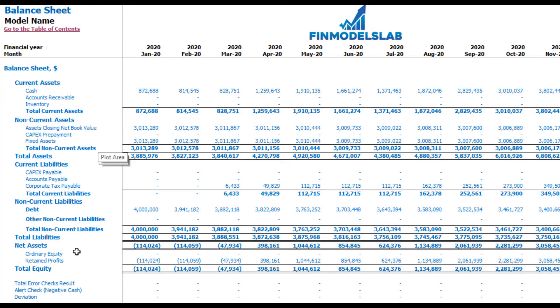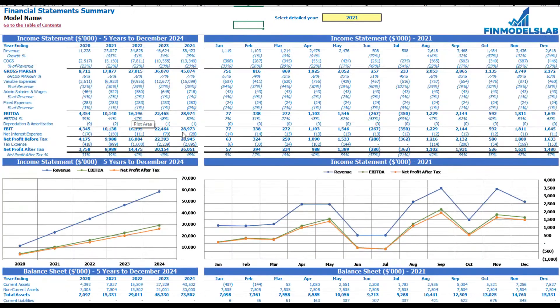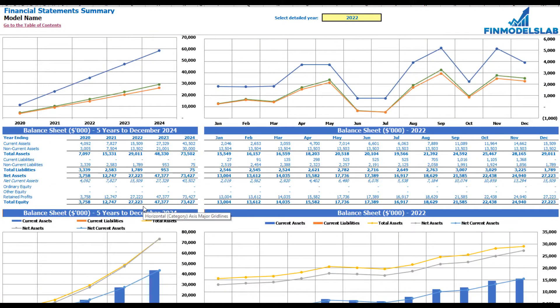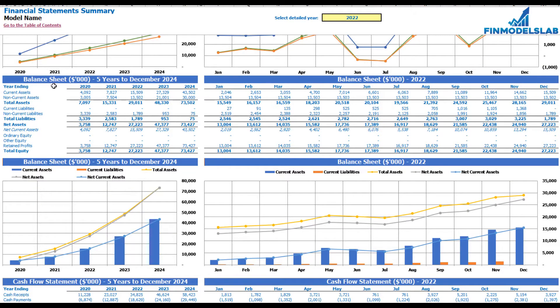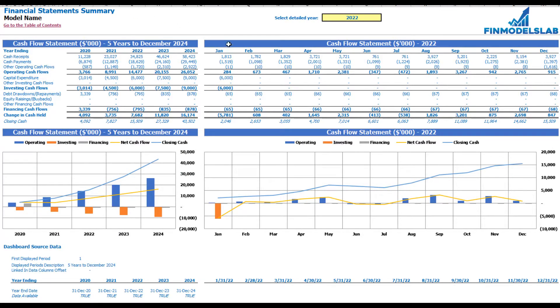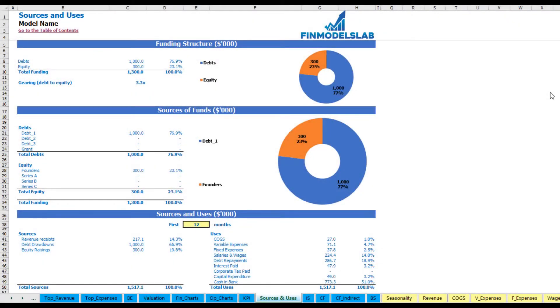The financial statement summary tab shows a summary of all three statements. At the top, the income statement is broken down by five years and a selected year broken down by months, with the same information shown in chart form below. The next set of tables and charts shows balance sheet main KPIs by five years and the selected year by months, and finally the cash flow statement breakdown for five years and twelve months of the selected year, with charts.